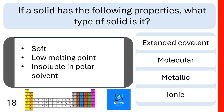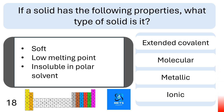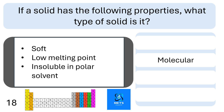Question nineteen: if a solid is soft, has a low melting point, and is insoluble in polar solvent, what type of solid is it? Is it extended covalent, molecular, metallic, or ionic? This is a molecular solid.